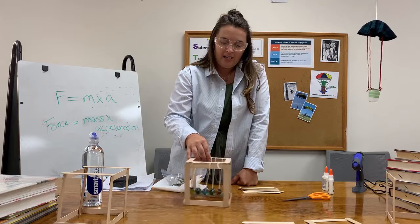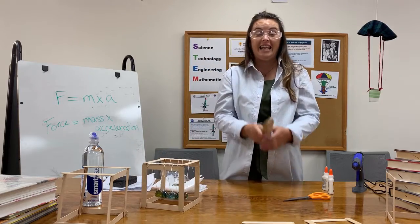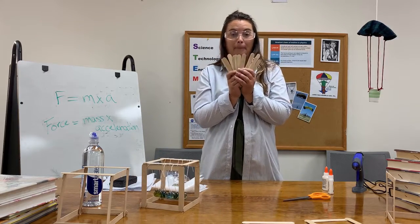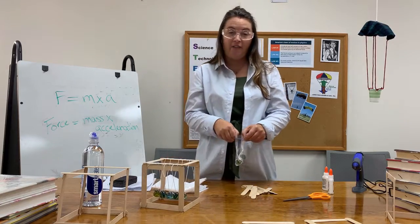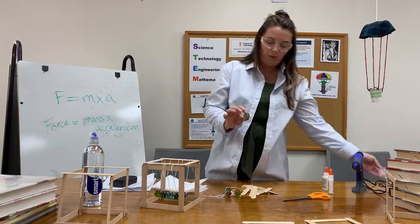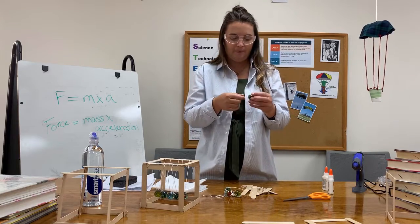In your kit you have 14 popsicle sticks. Then you have five marbles with your string already attached to them.